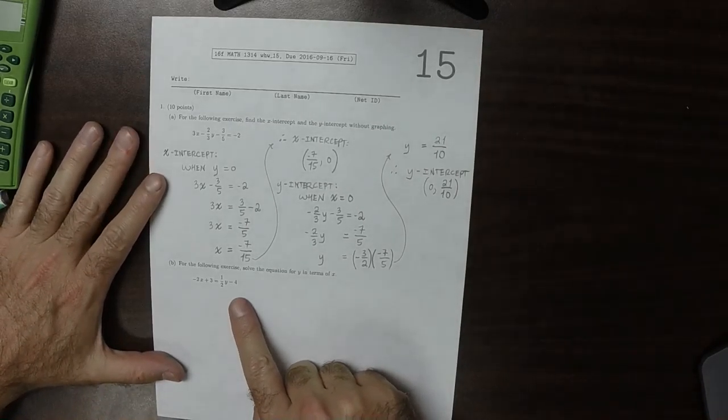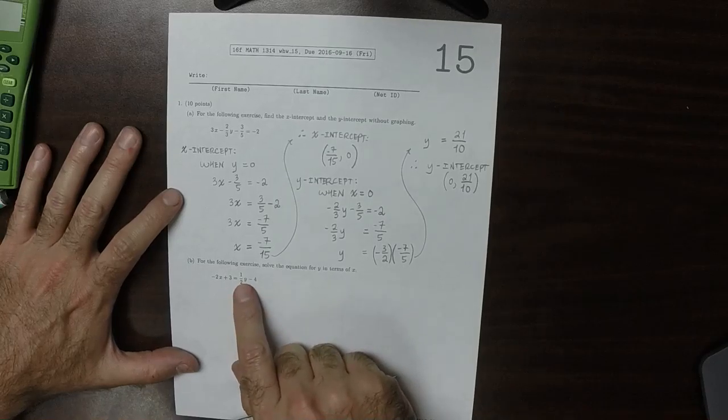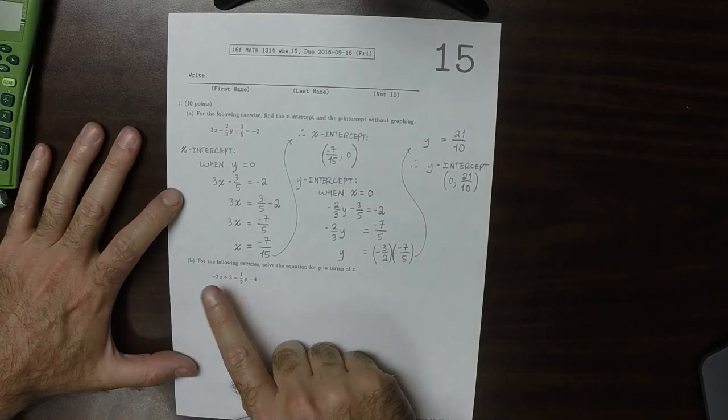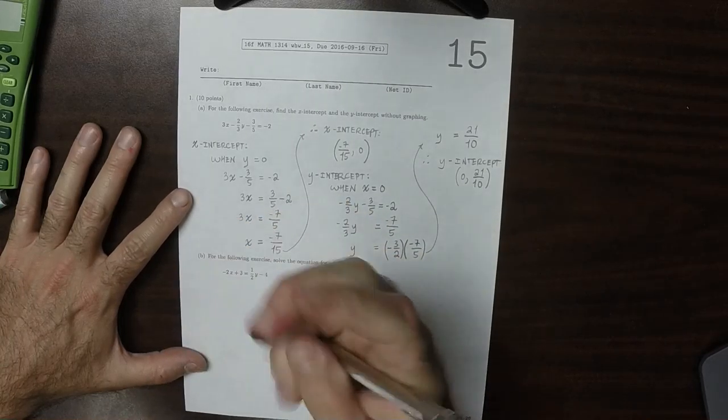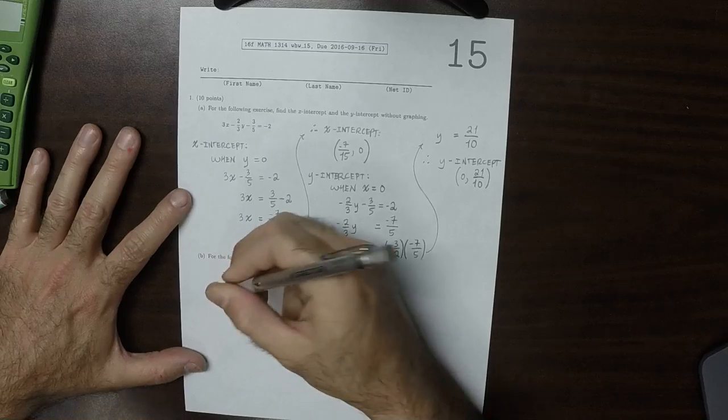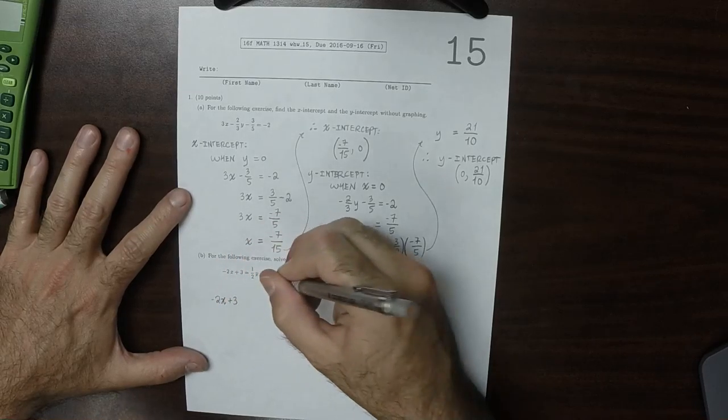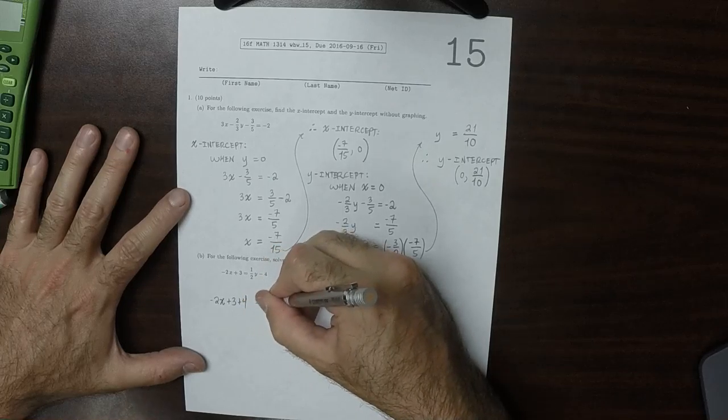So I'll solve for y in terms of x. So here's y, and all the x is over there, so I'll move that 4 to the other side. So that would be negative 2x plus 3 plus 4 is half y.